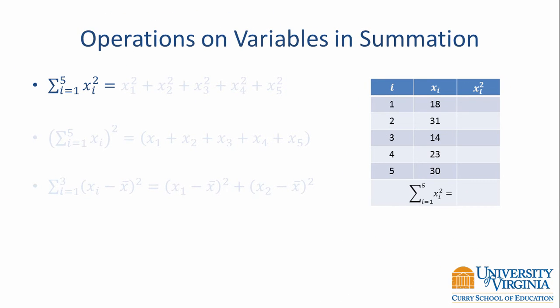Here is an example of when you have to pay attention to the order of operations. We have the sum from i equals 1 to 5 of x squared sub i. This expands to x sub 1 squared plus x sub 2 squared plus x sub 3 squared plus x sub 4 squared plus x sub 5 squared — notice that we're squaring the values first, and then we add them up. In the context of our data example, we take 18 squared (which is 324), then square 31 to get 961, and continue squaring each value. Once we have squared all the values, we add them up to get 2,910.